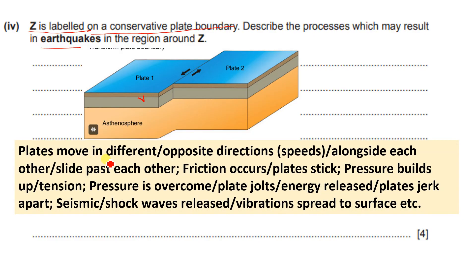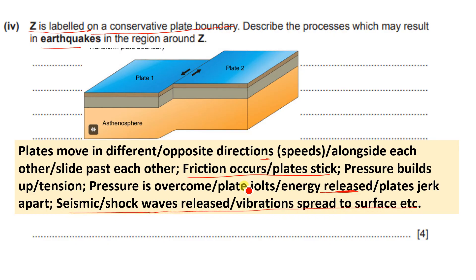The plates move in different or opposite directions alongside each other, sliding past each other. Friction occurs as they slide past, and the plates get stuck. Pressure builds up, and once that pressure is overcome or released, seismic shock waves and vibrations are sent throughout the Earth's surface — that is how an earthquake occurs.